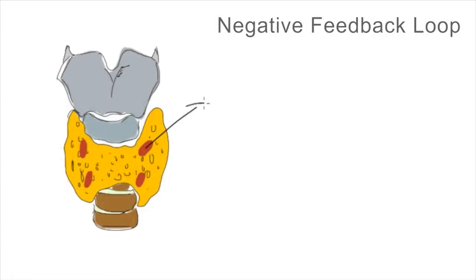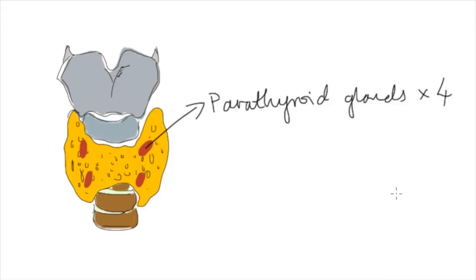Behind the thyroid glands, in somewhat variable positions, are four small parathyroid glands. These secrete parathyroid hormone, which acts to raise the serum calcium level. This is important, as these parathyroid glands can be disturbed during thyroid surgery, as we will come to later.